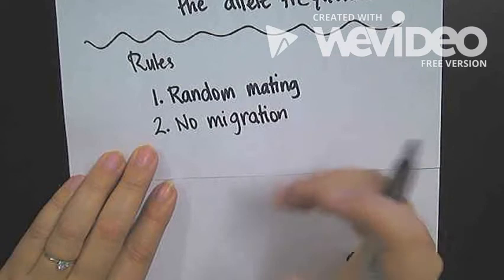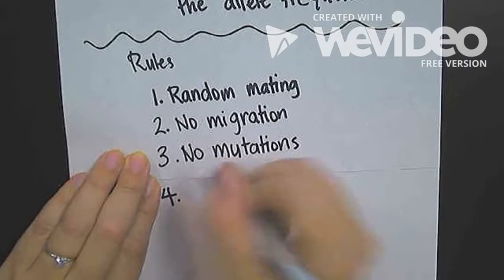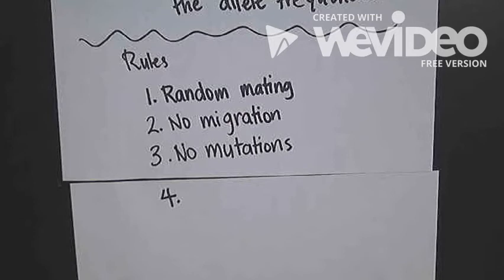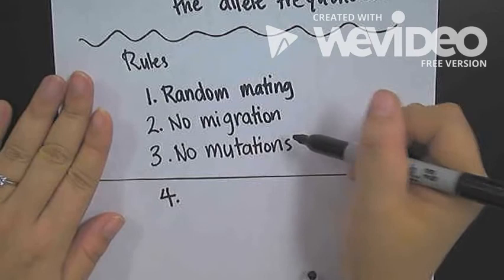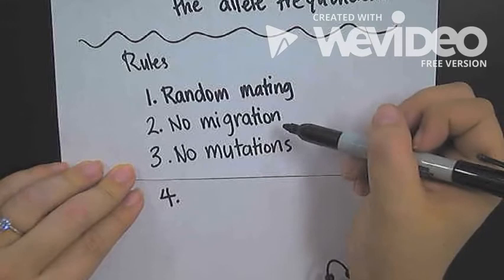Number three, no mutations. Mutations will change whether or not your population is in Hardy-Weinberg equilibrium. So in order for this population to actually be in equilibrium, there can't be any mutations going on.